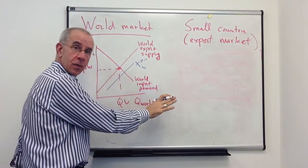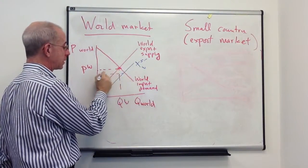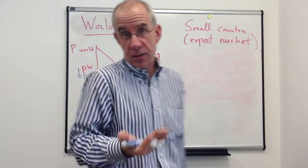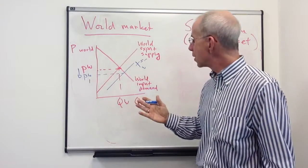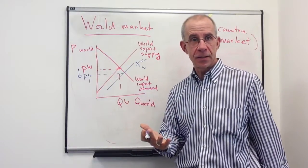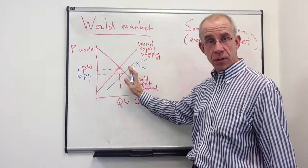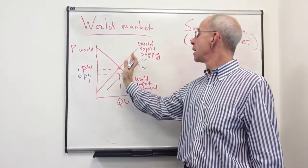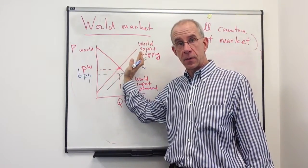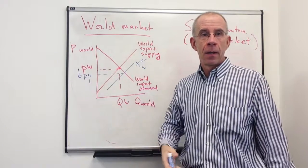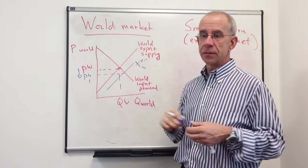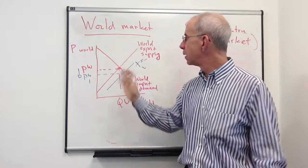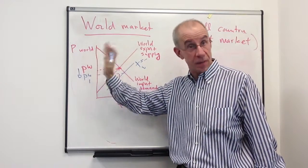When the large country increases its exports, that is going to tend to drop the world price because they're a big enough market. So for a large country, changes in the domestic conditions is going to affect the world price. For a large country in the export markets, an increase in the supply reduces the price in the international markets. If there's a reduction in supply, say if it's an agricultural product, there's a wheat failure in, say Russia, that's going to decrease the supply, that's going to change the price as well.